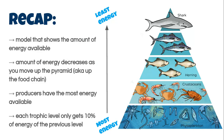So let's recap. Energy pyramids are models that show the amount of energy available in an ecosystem. The amount of energy decreases as you move up the pyramid, also known as the food chain. Producers have the most energy available, and lastly, each trophic level only gets 10% of energy from the previous level.